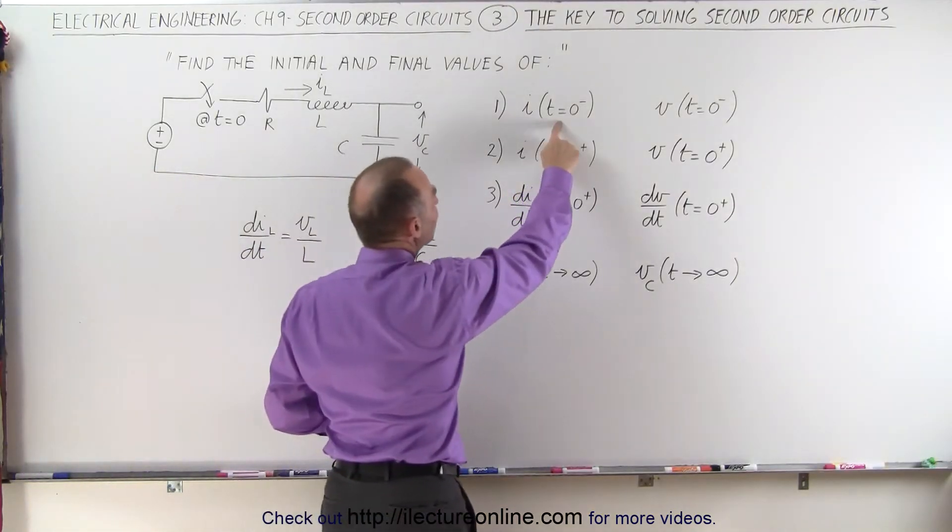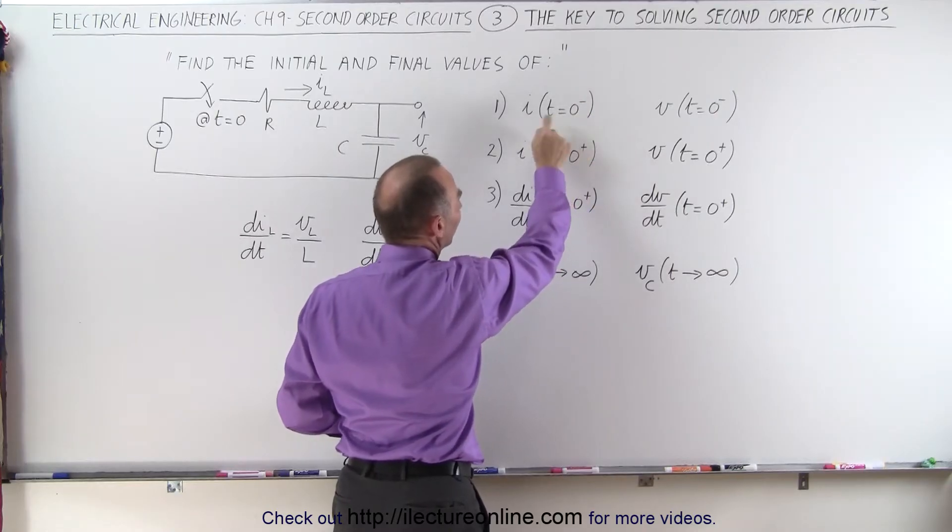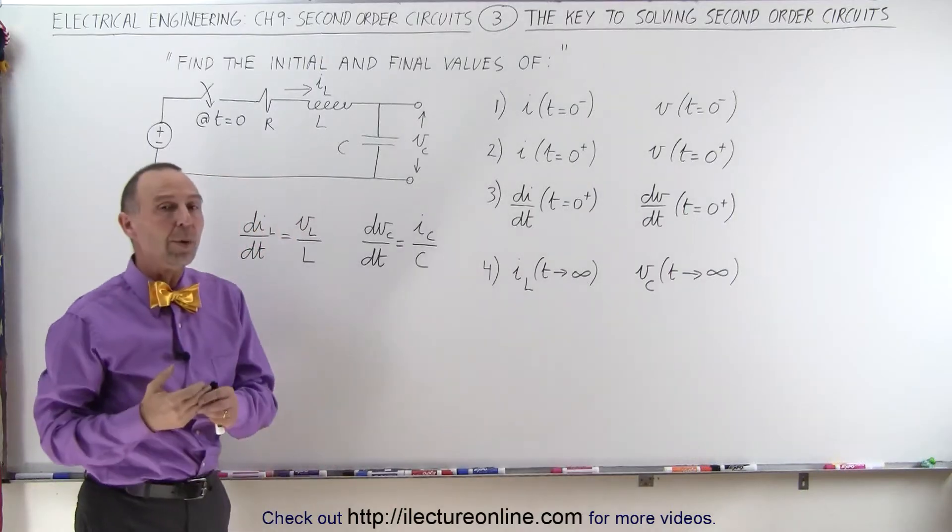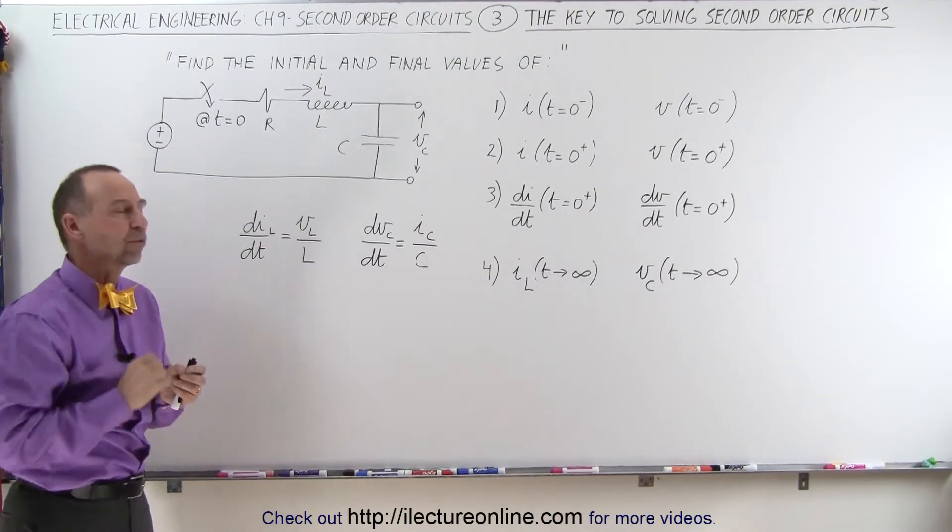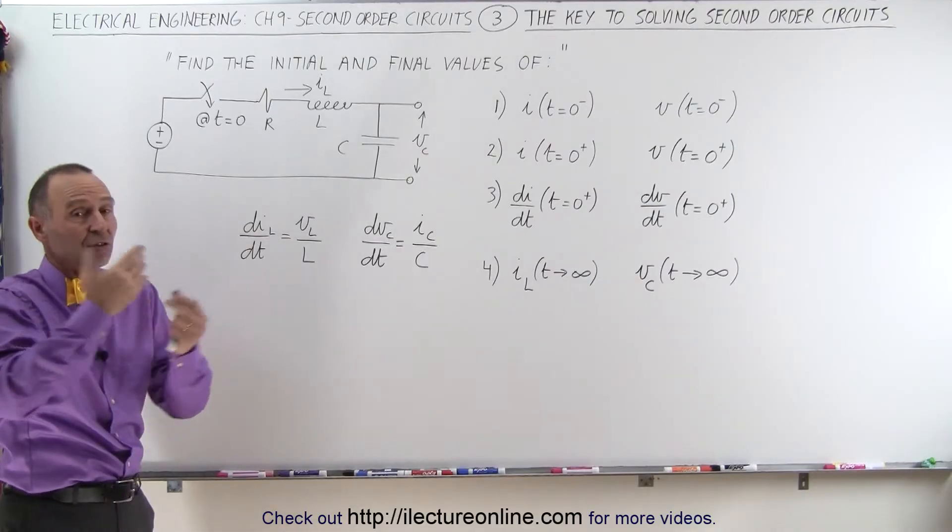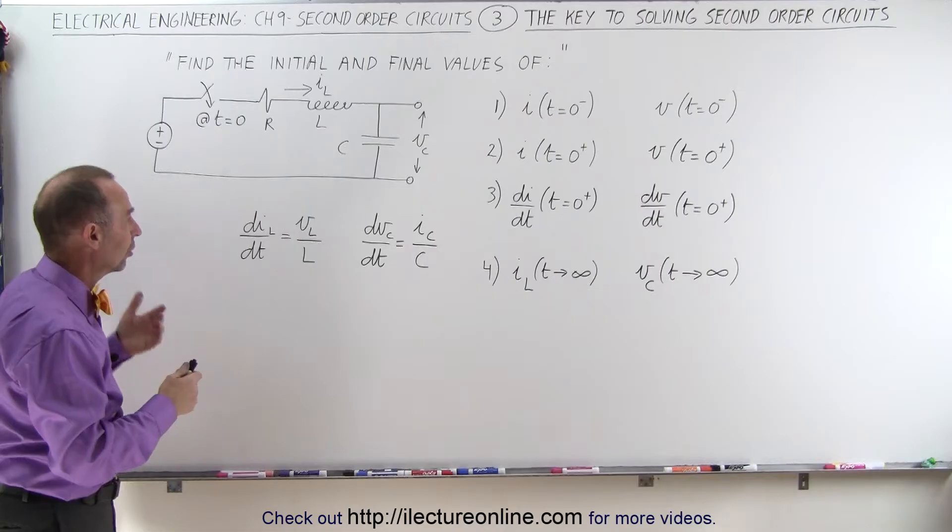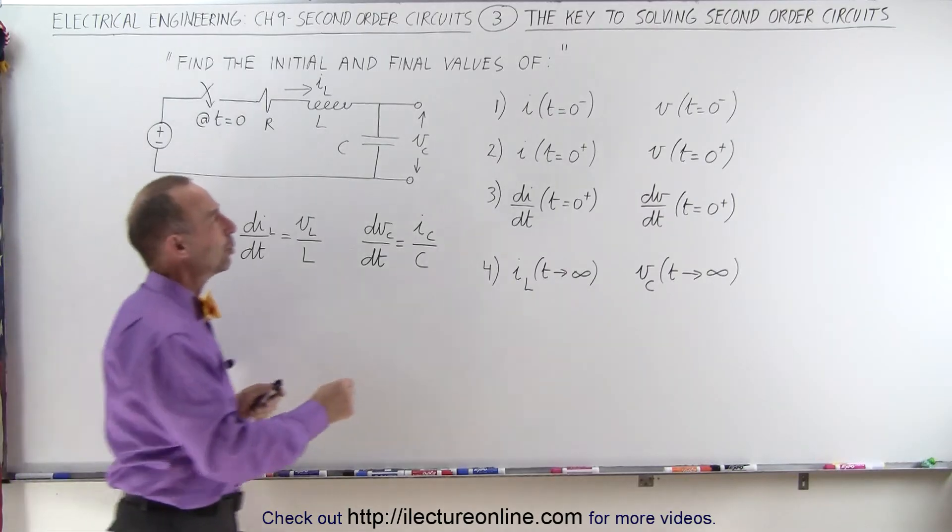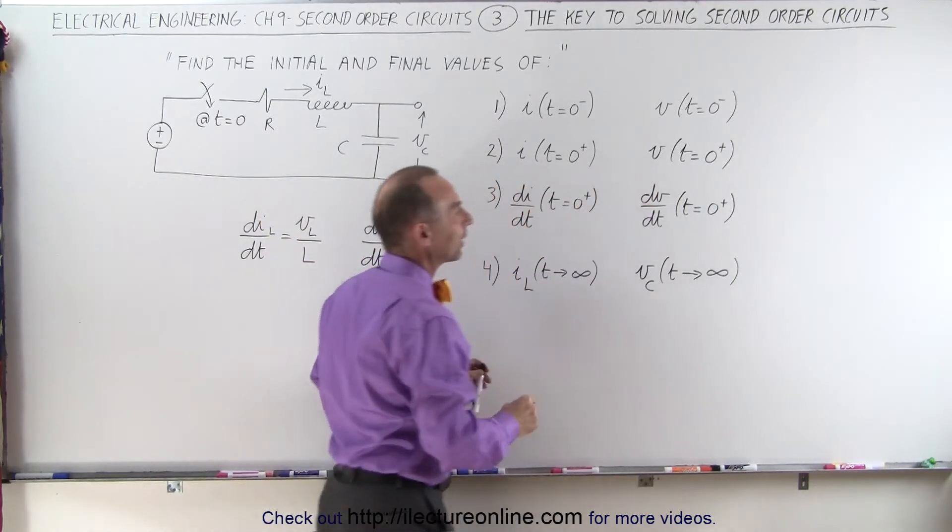So we indicate that when t is less than zero, zero minus, that means less than zero, what was the current and what was the voltage? And then we want to do it again right after the switch is closed. The very moment the switch is closed or the very moment the switch is open, depending upon what's happening, or the very moment a circuit or voltage source or current source is turned on. Again, you want to establish what the current is right afterwards and what the voltage is right afterwards.